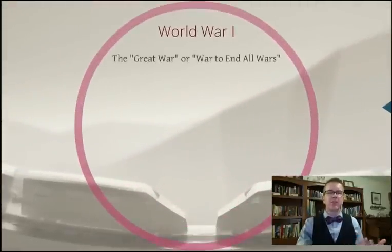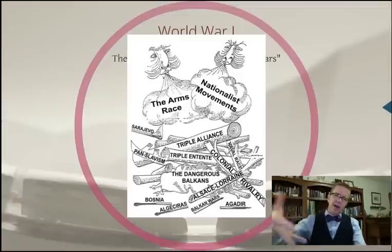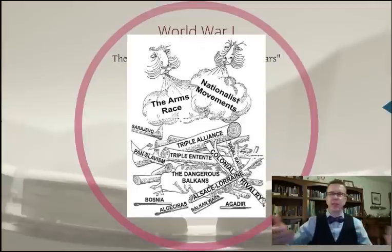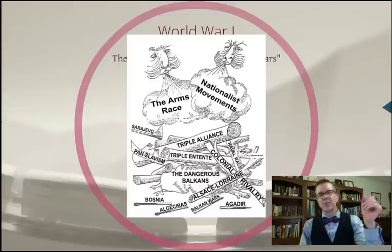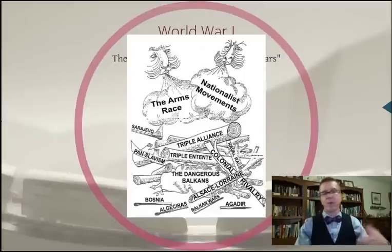So how does this all tie together? World War I — the Great War, or the war to end all wars — let's look again. We've got the arms race, nationalist movements, and here we see this pile of dried timber. We've got Pan-Slavism, Triple Alliances, Triple Entente, colonial rivalries, and Alsace-Lorraine — that region between France and Germany that Germany took in the Franco-Prussian War in 1870. There were some matches that didn't take: Bosnia, Algiers, the Balkan Wars. But the one match that's the spark is Sarajevo, where Archduke Francis Ferdinand is assassinated. Then Austria-Hungary declares war on Serbia, Russia gets involved, Germany gets involved, and everyone else has alliances. That's the problem.